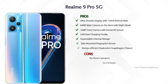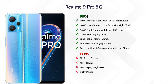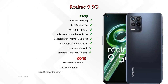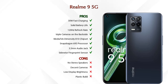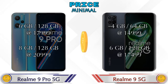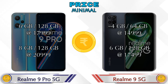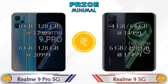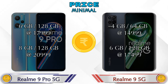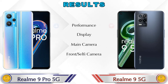For pros and cons, the Realme 9 Pro 5G has seven pros and four cons, while the Realme 9 5G has eight pros and four cons. On pricing: the Realme 9 Pro 5G is available in 6GB RAM with 128GB storage at ₹17,999. The Realme 9 5G comes in 4GB RAM with 64GB storage at ₹14,999, and 6GB RAM with 128GB storage at ₹17,499.